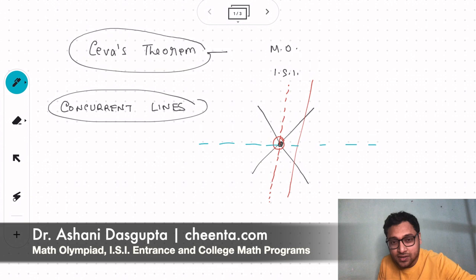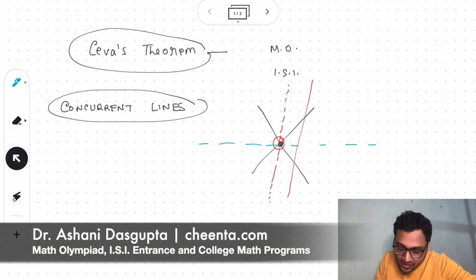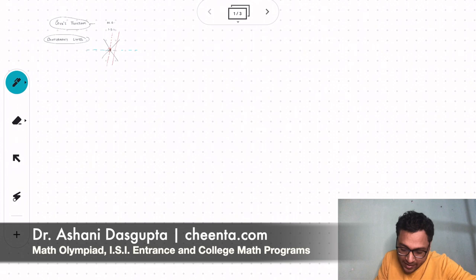So this is the meaning of concurrent lines. And what does Ceva's theorem give us? It gives us a condition when three lines in a particular triangle are concurrent. So to understand Ceva's theorem, we have to first understand the word cevian.